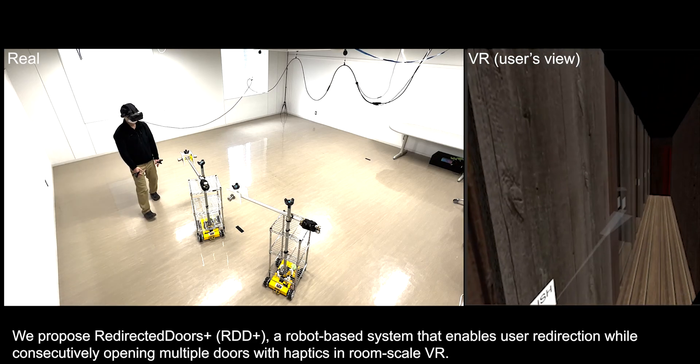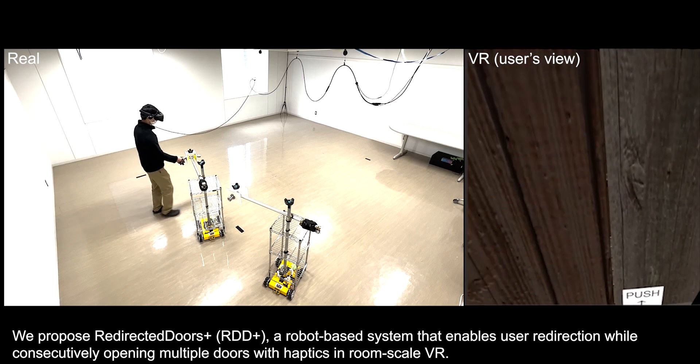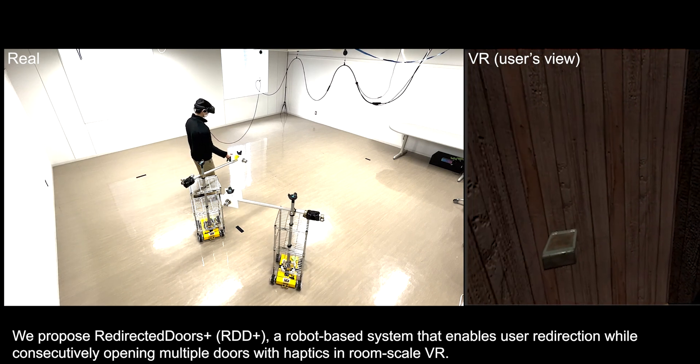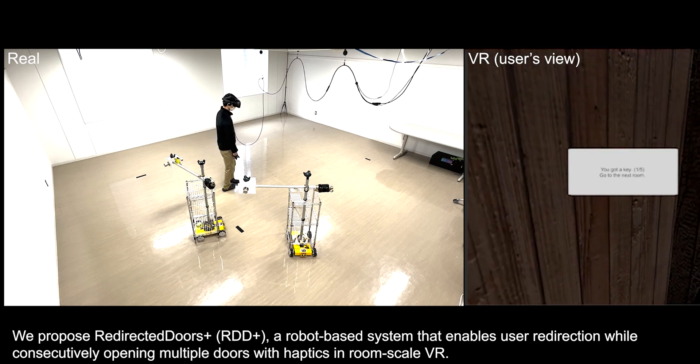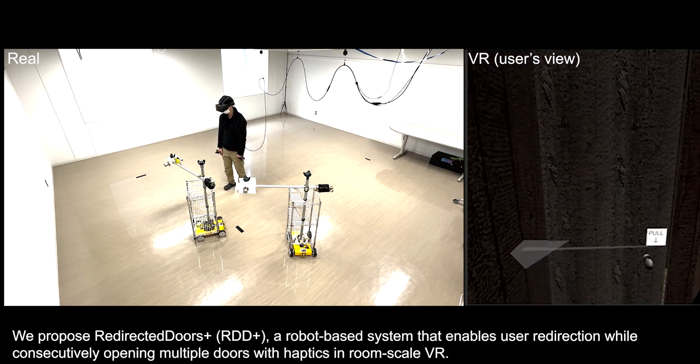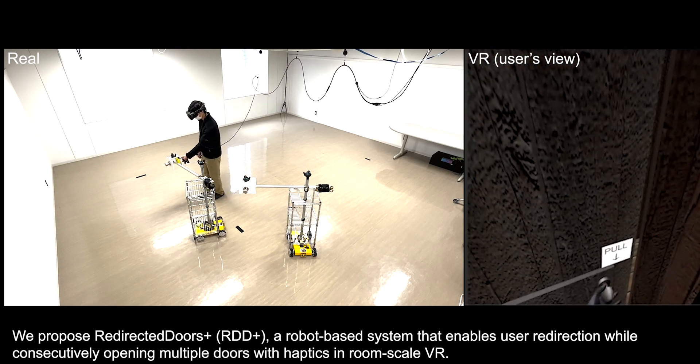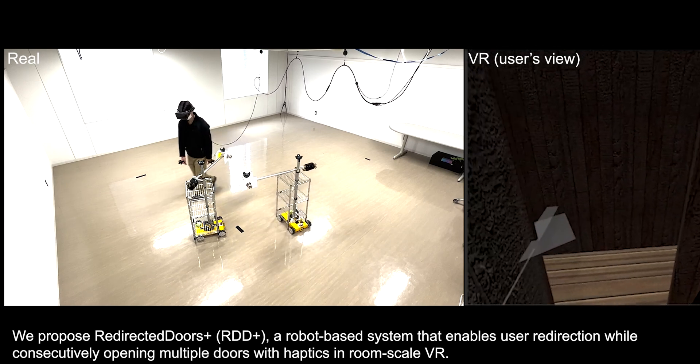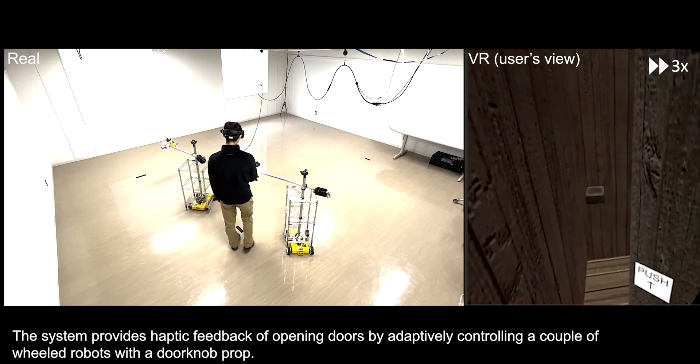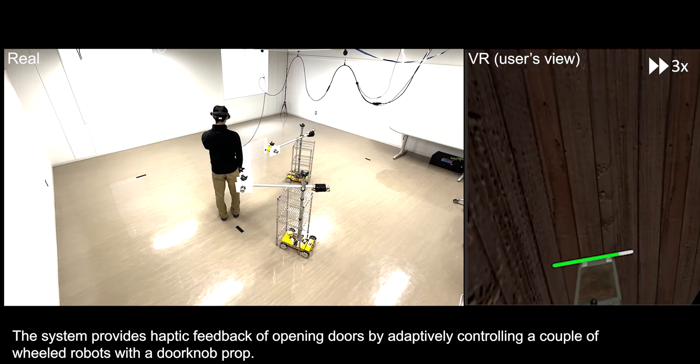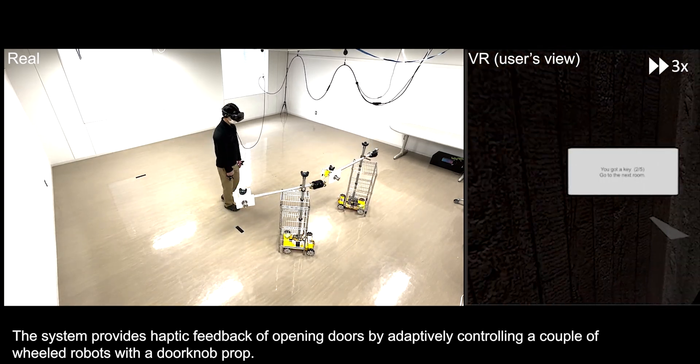We propose Redirected Doors Plus, a robot-based system that enables user redirection while consecutively opening multiple doors with haptics in room-scale VR. The system provides haptic feedback of opening doors by adaptively controlling a couple of wheeled robots with a doorknob prop.